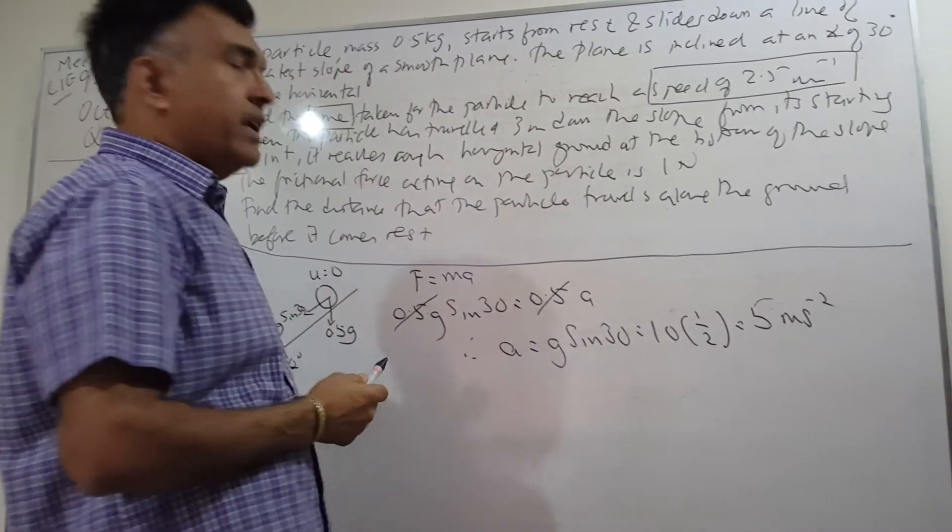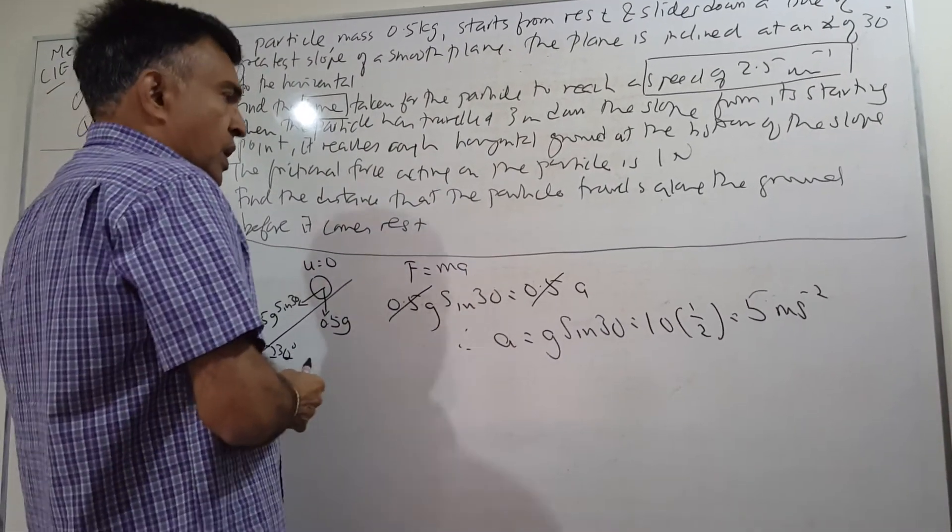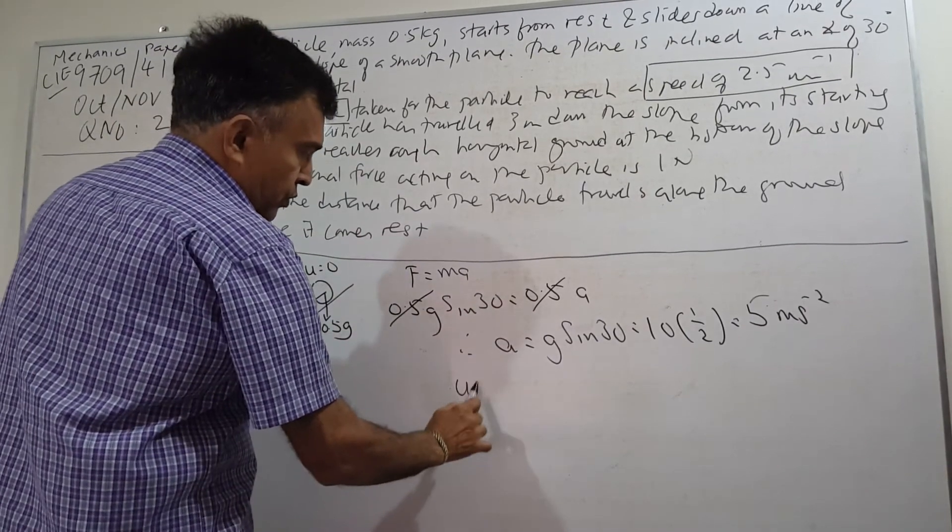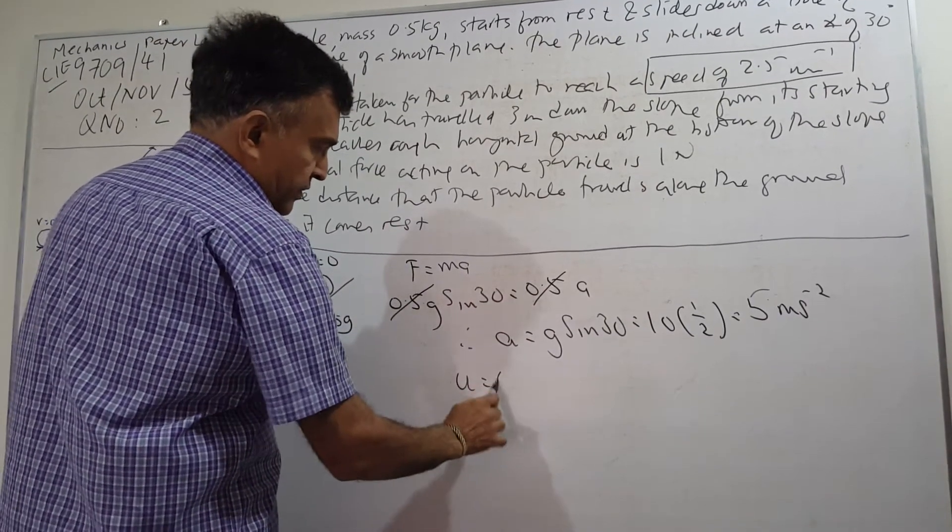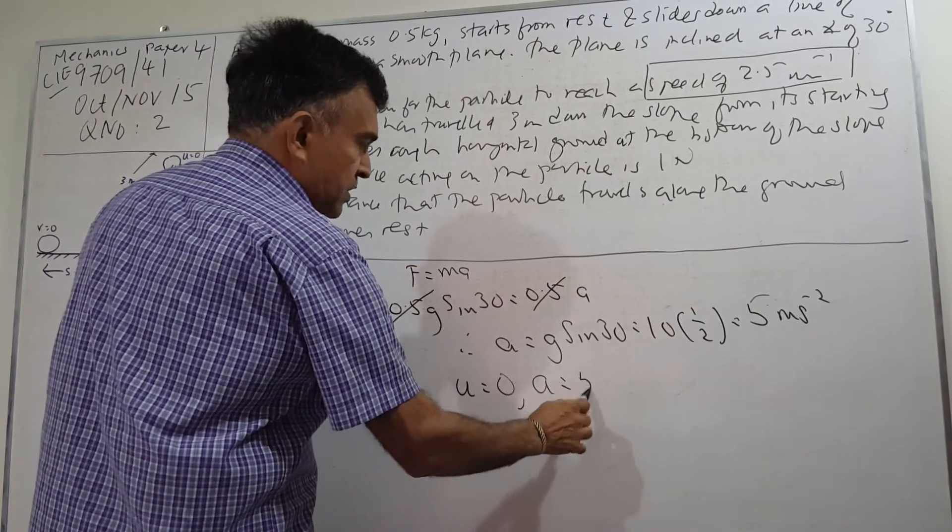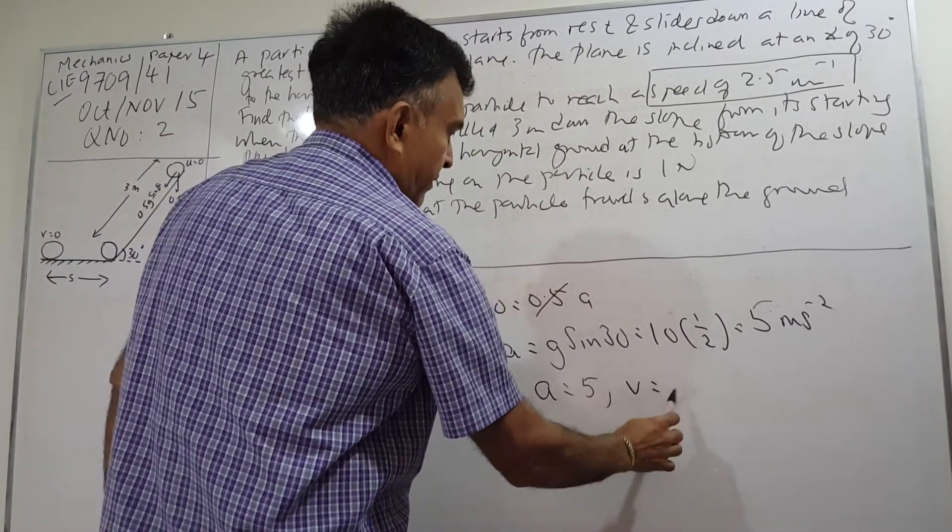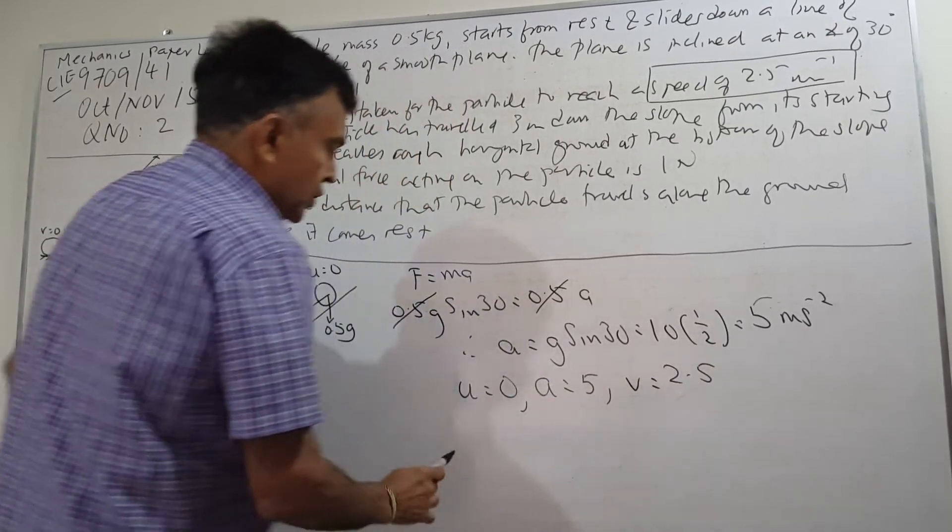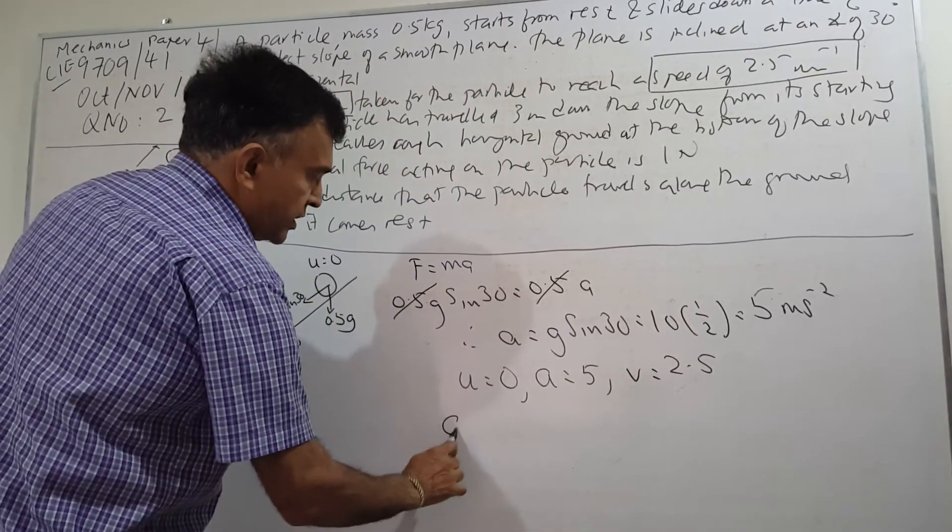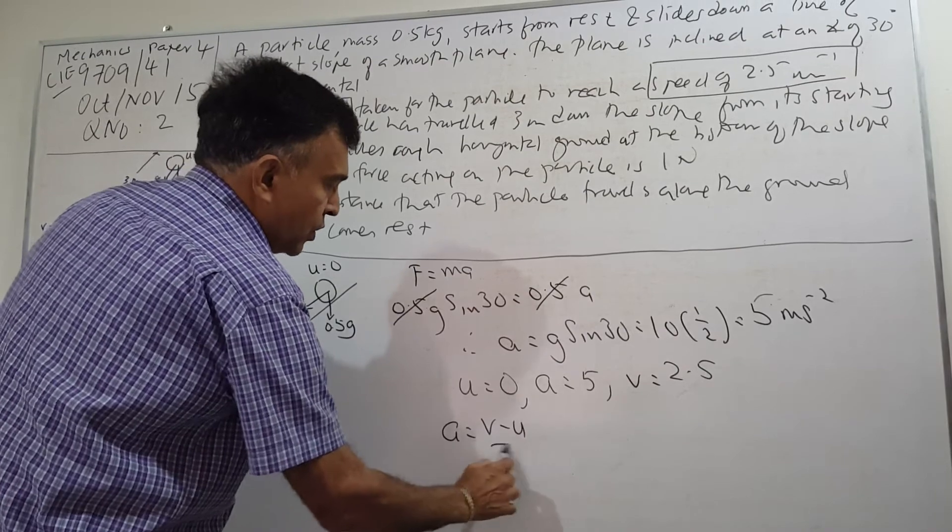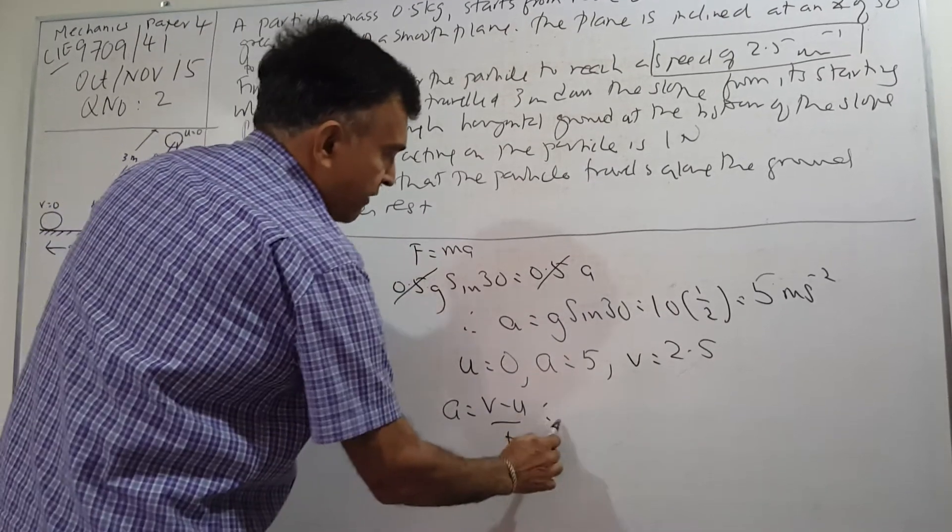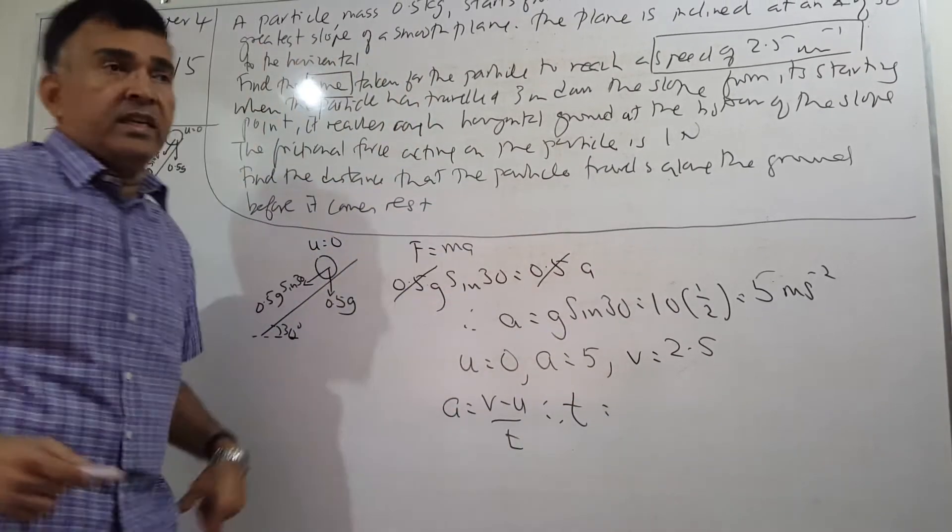Now I know my u which is 0, I know my a which is 5, and I know my speed, my final speed will be 2.5. So I can use the definition of acceleration: a equals v minus u over t. Therefore I'm trying to find t.